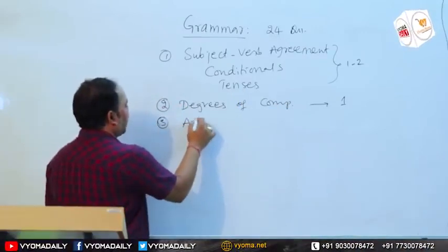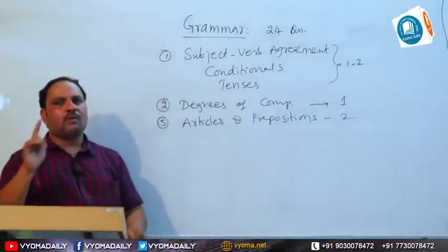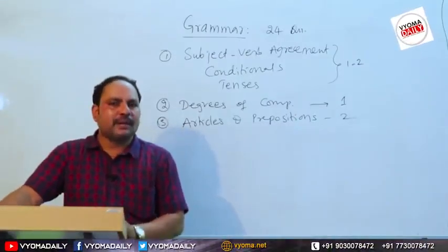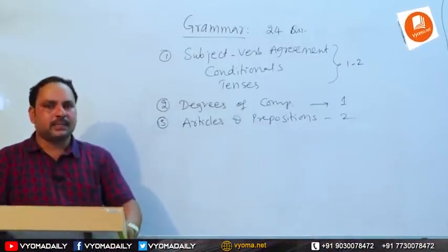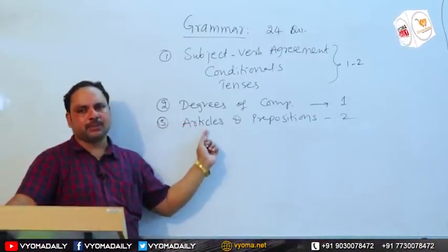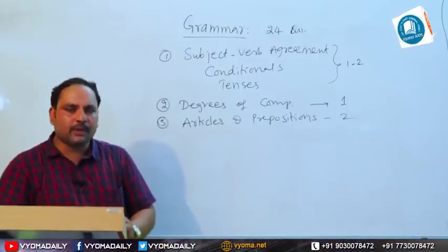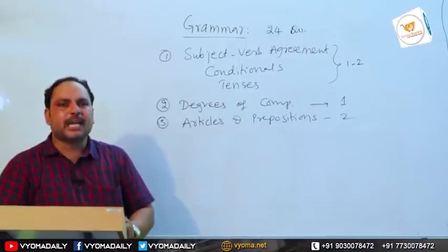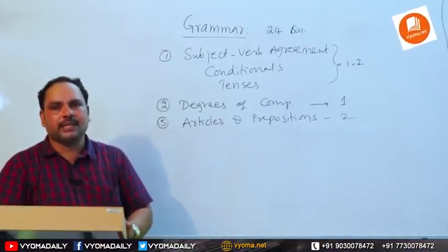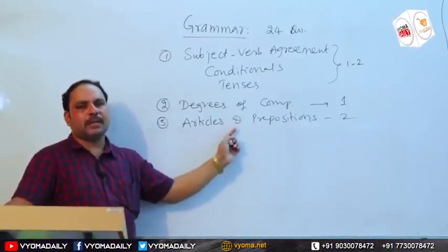Another important area is articles and prepositions, where two questions will be asked — one from each topic. For articles, questions focus on usage of 'a' and 'the', and omission of articles (zero articles). For prepositions, there are four areas: introduction to prepositions, different types of prepositions, correct use of prepositions, and words followed by prepositions.